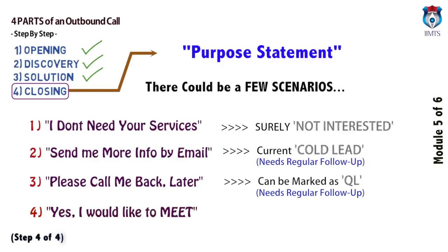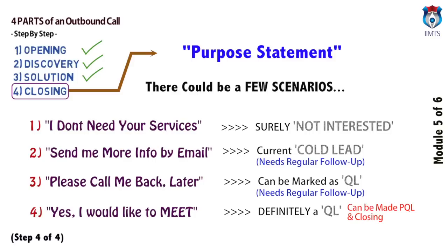Fourth scenario could be where a prospect wants to meet you. If a prospect specifically mentions that yes, there is a course they would be interested to enroll into and they want to log into the learning management system and the web class to understand how you work, that means this lead is definitely a qualified lead and can soon be converted into a potential qualified lead. All that is needed is one meeting with the academic counselor, or them logging into the learning management system, or attending a web class. We need to ensure that we capture an appointment as soon as possible so that our academic counselors can meet them, clarify all doubts, and get them enrolled into a course.